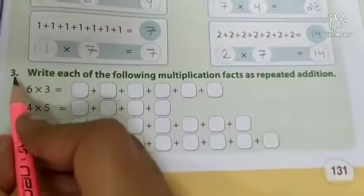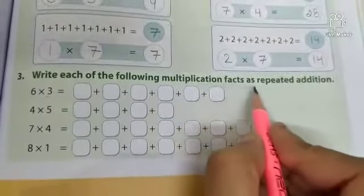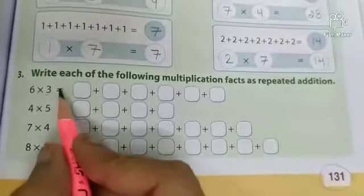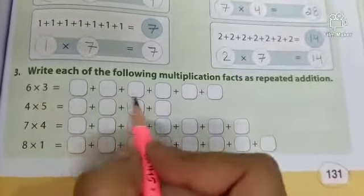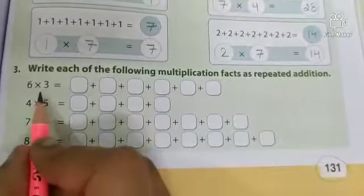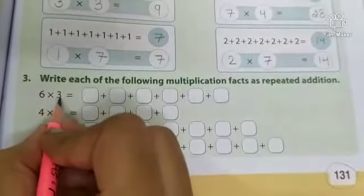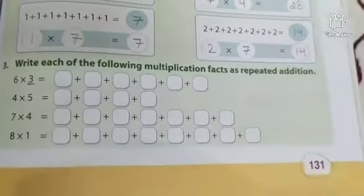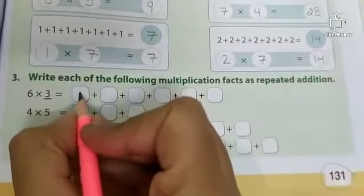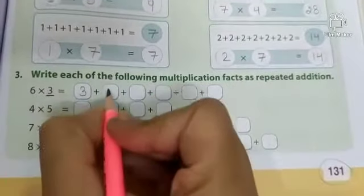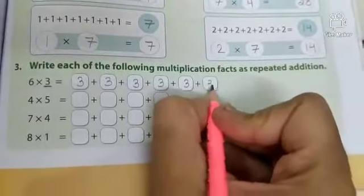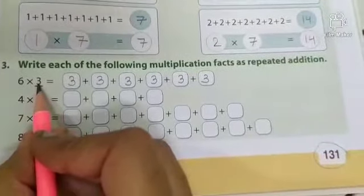Now come to question number 3. Write each of the following multiplication facts as repeated addition. So these are the multiplication facts and we have to write the addition fact of these multiplication facts. So 6 threes are, means 6 times 3. So we have to write 6 times 3. 1, 2, 3, 4, 5, 6. Now 6 threes are 18. Alright?